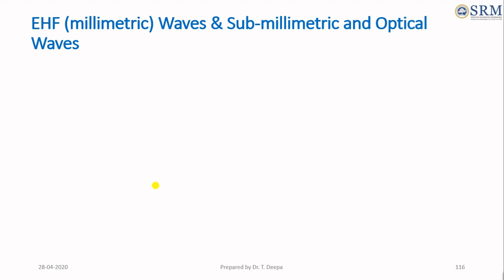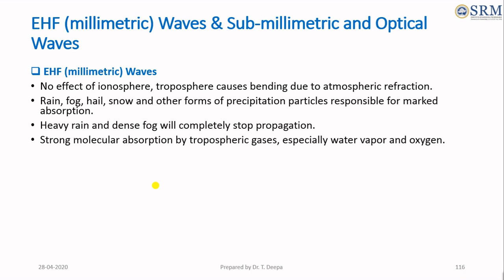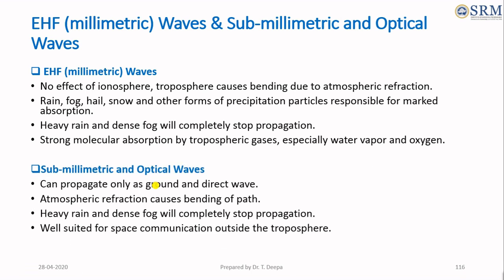Extremely high frequency waves, also called millimeter waves, have characteristics given in this slide. These waves are absorbed during transmission due to heavy rain and dense fog, which can completely stop propagation. Some millimetric and optical waves are well suited for space communication outside the troposphere.